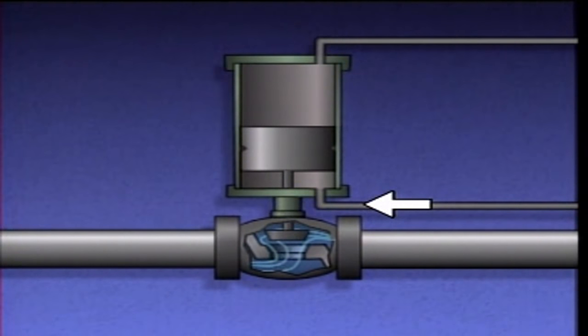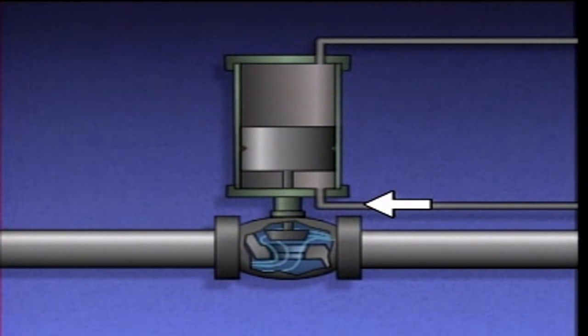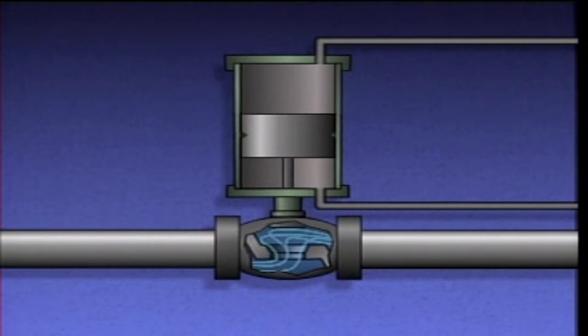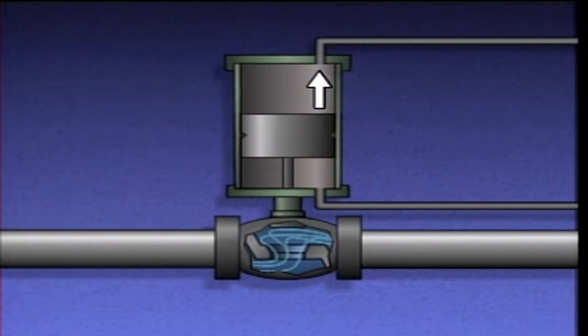When air pressure is fed into one supply port, it pushes against one side of the piston, which moves the piston to open the valve. Air on the other side of the piston is bled off through the other air supply port.